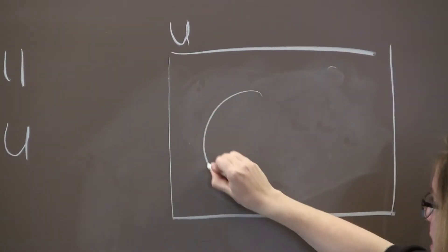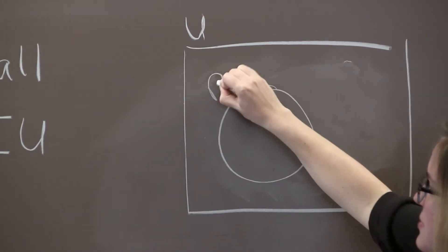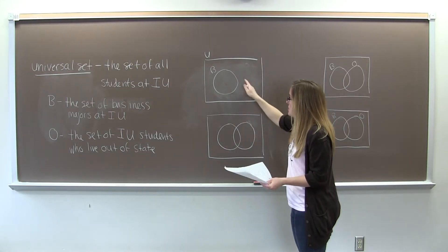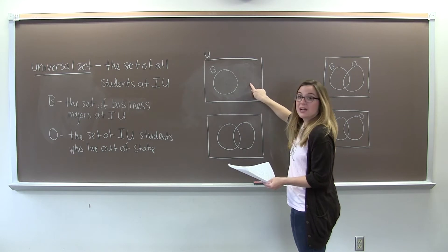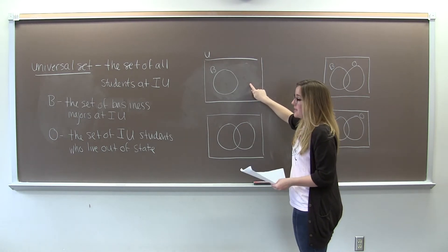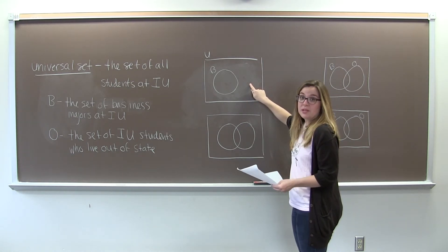So we'll start by drawing the set B. We'll represent it as a circle. So we need to draw this circle B like this because we need a region outside of B that would represent the set of students at IU who don't want to major in business.